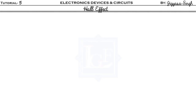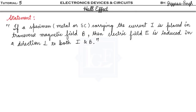Hello and welcome to the fifth lecture of Electronic Devices and Circuits. Today we'll be studying about the Hall effect. Its statement says that if a specimen — metal or semiconductor — carrying current I is placed in a transverse magnetic field B, then an electric field E is induced in a direction perpendicular to both I and B.